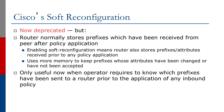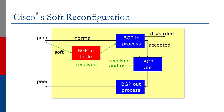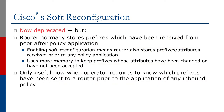Just before Route Refresh was introduced as a standard, Cisco produced a small feature called Soft Reconfiguration. It's really not used anymore, but what it did was actually store all the prefixes that were received from the neighbor. Normally the router would just keep the prefixes after the policy was applied, but Cisco's Soft Reconfiguration would keep all the prefixes received, even those that were thrown away by the policy. The side effect is that it uses extra memory to keep prefixes whose attributes have been changed or which have not been accepted. Today, it's considered only useful when the operator needs to know which prefixes have been received before the application of any inbound policy.